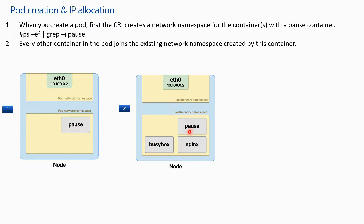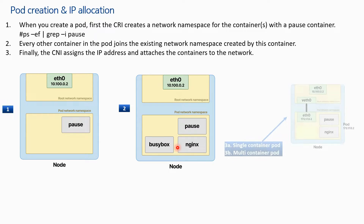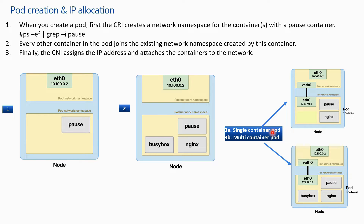For example, let's say in this pod we would like to create two containers — nginx and busybox. These nginx and busybox will join this network namespace. Finally, the CNI will assign the IP address and attach the containers to the network. Up until this point no IP address has been allocated, but once the container images are pulled and created successfully, the CNI will do this job.